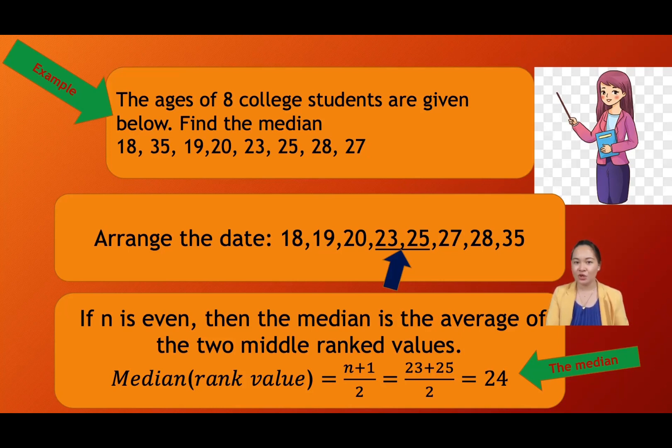Eight divided by two is four. So the fourth and the fifth, you get the average of the fourth and the fifth data. So we have here the fourth data is 23. The middle rank value is 23 plus 25 divided by two. So the median of the ages of eight college students is 24 years old. That is an example of finding the median if the given is an even number of data set.